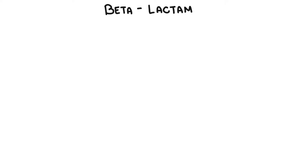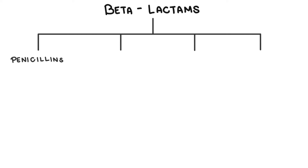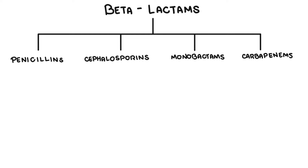So what is the classification of penicillins? Penicillins are beta-lactam antibiotics because they contain the beta-lactam ring. There are also other antibiotics that have a beta-lactam ring in their molecular structure: cephalosporins, monobactams, and carbapenems.